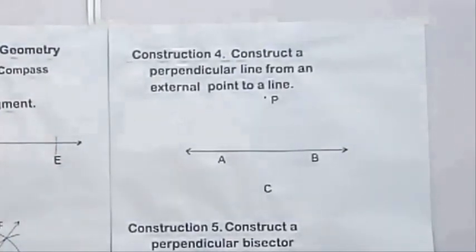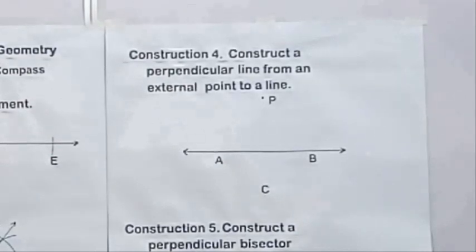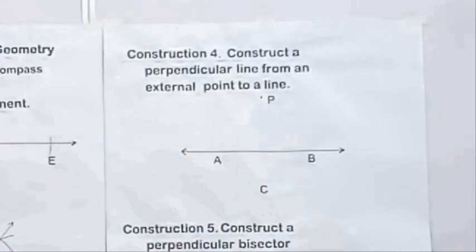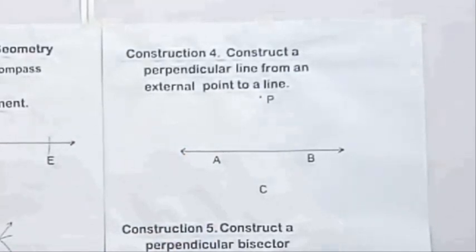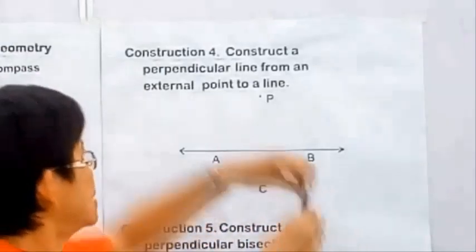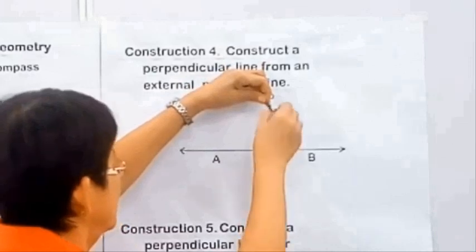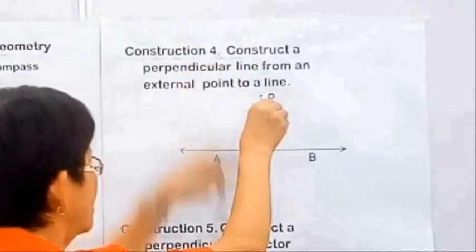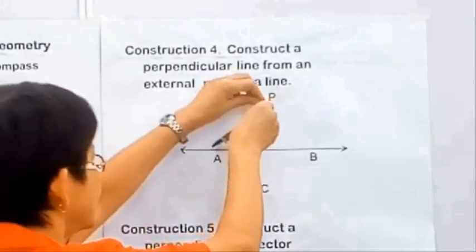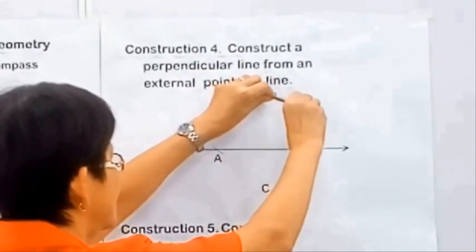Next is to construct a perpendicular line from an external point to a line. The external point here is point P, and the line is line AD. From point P, we adjust the opening of the compass and swing an arc to intersect line AB at two points: at A and at B.